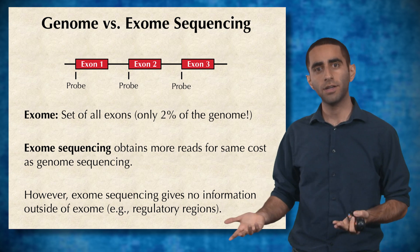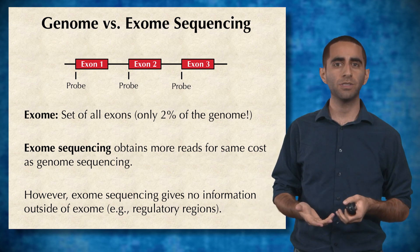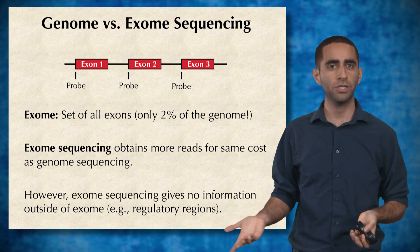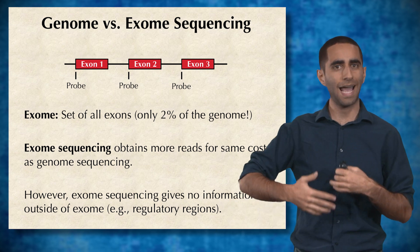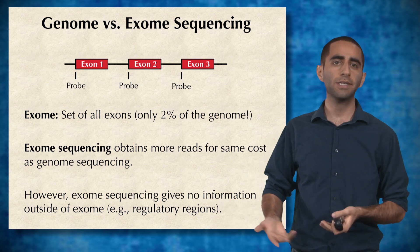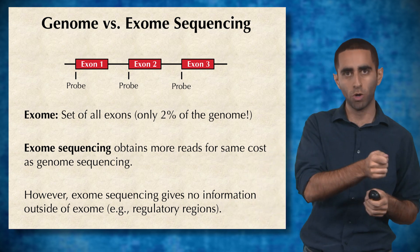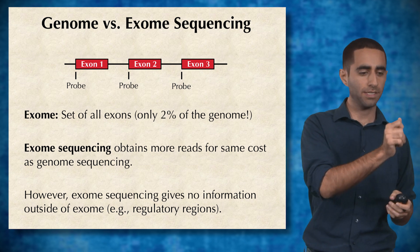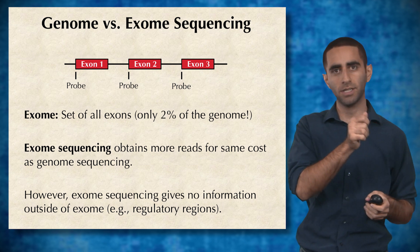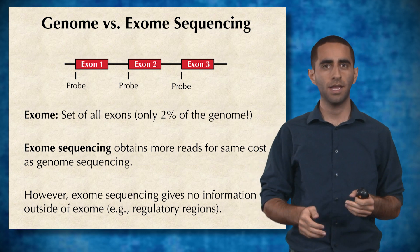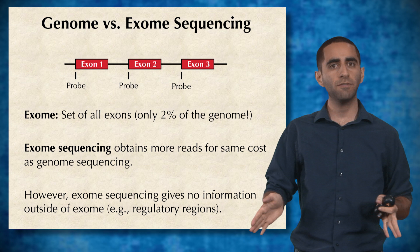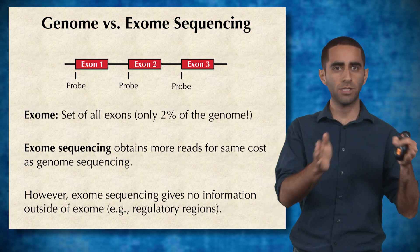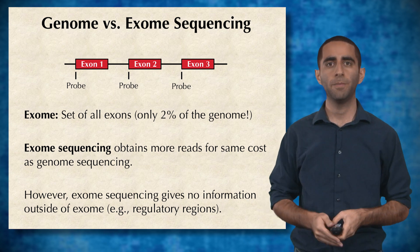However, by definition exome sequencing gives us absolutely no information about anything outside of the exome. We need probes known beforehand to target specific exons, and the only information we can get is the region directly next to those probes.